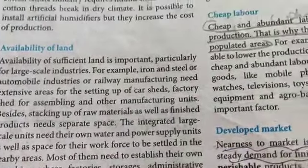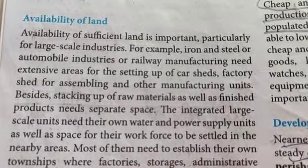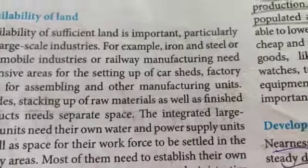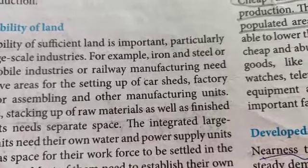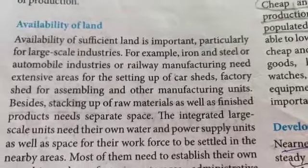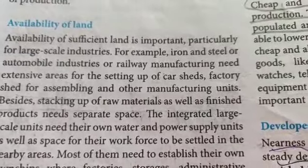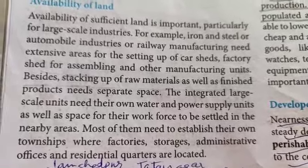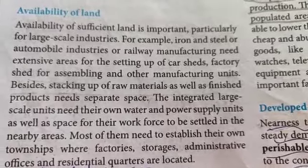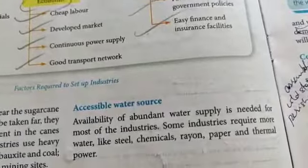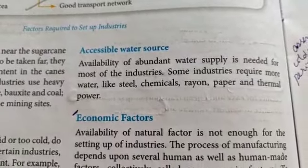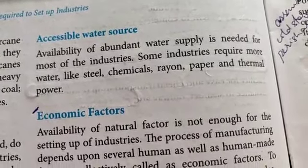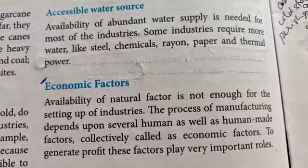We also learned about availability of land — if sufficient land is not available near where the raw ore is extracted, it increases production cost because a lot of money is required for transportation of ore from the extraction unit to the processing unit. Then we talked about accessible water sources: abundant water supply is needed for most industries such as steel, chemical, rayon, paper, and thermal power.